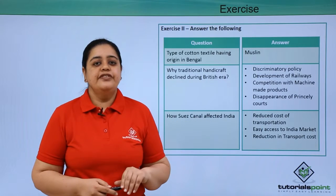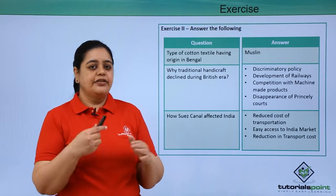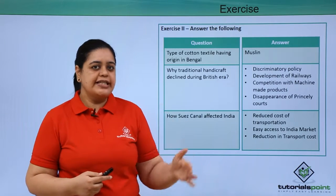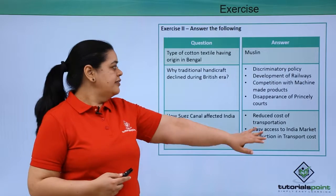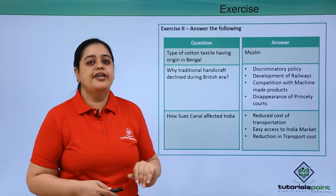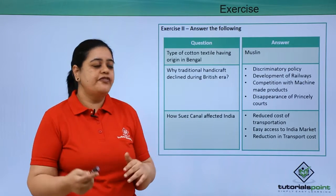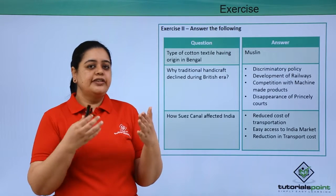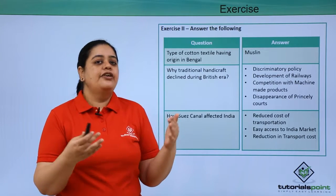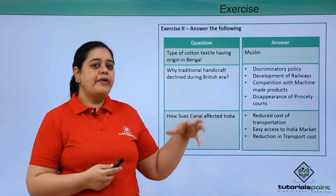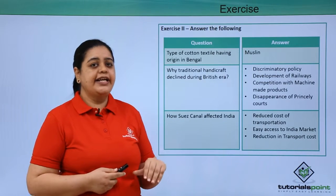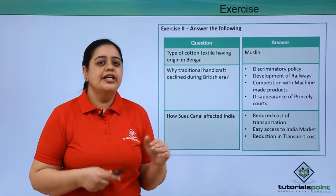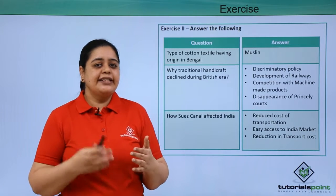Because of the development of railways, although transport of goods became easier, the reach of machine-made products became much faster. Princely courts — the princes and kings — were the main buyers of handicraft goods in India. The disappearance of those princely courts led to a significant decline in demand for handicrafts.